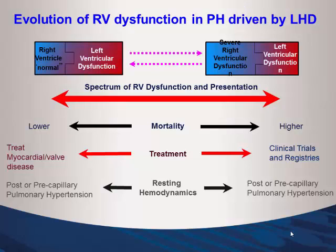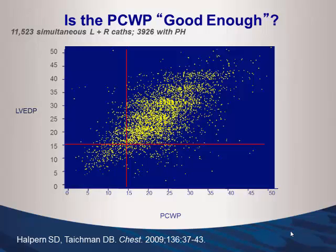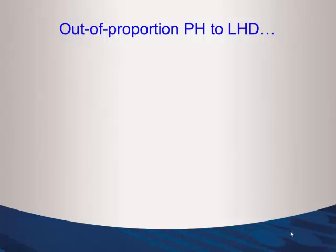Almost 12,000 cases at University of Pennsylvania were reviewed — retrospectively comparing left and right heart catheterizations looking at wedge pressure and LVEDP correlation. You would expect linear correlation, but a significant number of patients have an elevated LVEDP with a wedge less than 15, and vice versa. This is all measurement error, and we see it every day. Even at major PH programs, tracings must be reviewed carefully because wedge measurements are frequently incorrect.